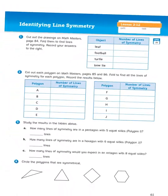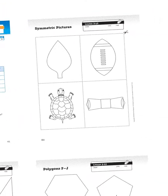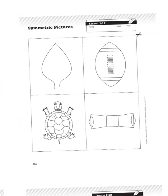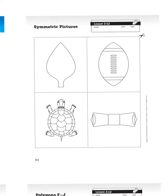So the first task has us looking at Math Masters page 84. It says cut out the drawings, fold them to find lines of symmetry, and then record your answers to the right. Well, this sheet is Math Masters page 84. And as you can see, we have a leaf, a football, a turtle, and a bow tie.